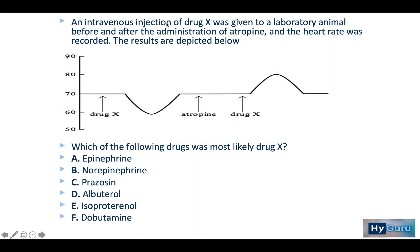This is a quick explanation of the question stem: which of the following drugs was most likely drug X? An IV injection of drug X was given to a laboratory animal before and after the administration of atropine, and the heart rate was recorded. The results are depicted below. Heart rate is on the y-axis, and drug X causes a decrease in heart rate.